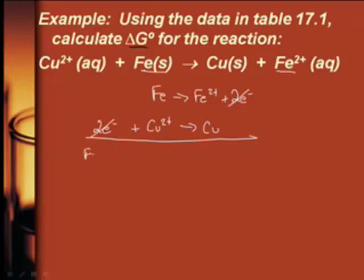So it will be Fe plus Cu 2 positive going to Fe 2 positive plus Cu. But now it's balanced — we didn't know that it would actually balance. And so now we do need to look up the values for the voltages for this.